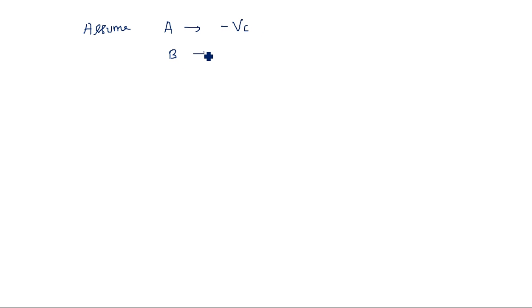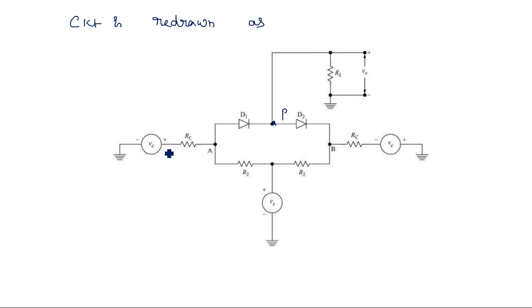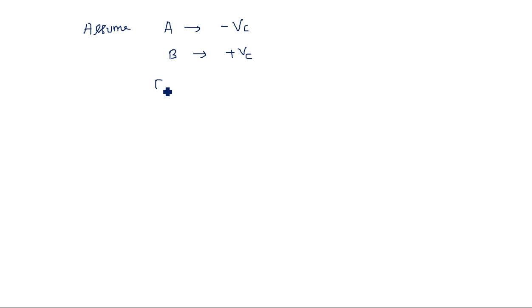Assume A is at minus Vc and B is at plus Vc - that is, the control voltage has a negative peak at A and positive peak at B. This means D1's P-terminal is connected to negative and D2's N-terminal is connected to positive, so both diodes D1 and D2 are in the OFF state. Therefore the output V0 equals zero - there is no output current.